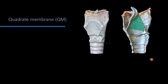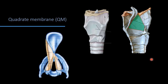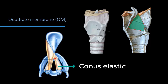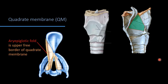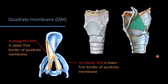In superior view we can see the quadrate membrane with its posterior attached margin to the arytenoid and anterior attached margin to the left border of the epiglottis. The superior border is free and the inferior border is free. The upper free border — from arytenoid to epiglottis — is the aryepiglottic fold. In the posterior part of this fold, very near to the arytenoid, we find the corniculate and cuneiform cartilages.